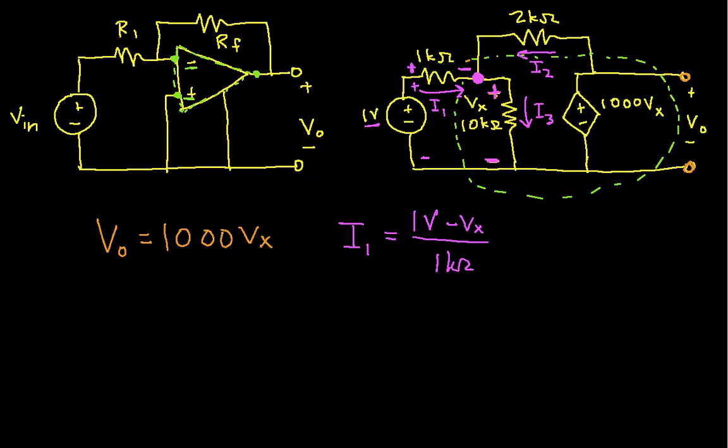I can see that this is the voltage, the 1 volt minus Vx, by noting that from here to here is 1 volt from here to here is Vx. So from here to here has to be 1 volt minus Vx. That gives me I1 in terms of Vx.